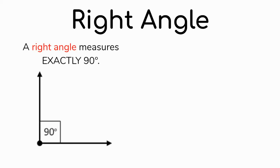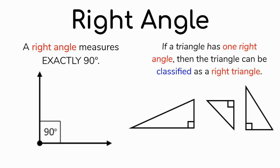Now let's talk about right angles. A right angle is an angle that has an exact measurement of 90 degrees — it looks like a corner in a room or a capital letter L. You'll see the 90-degree measurement in the corner, and also a little box drawn there. Anytime you see that little box, it is a symbol for a right angle. Any triangle that has one right angle is classified as a right triangle — it only needs one right angle, regardless of what the other two angles are.